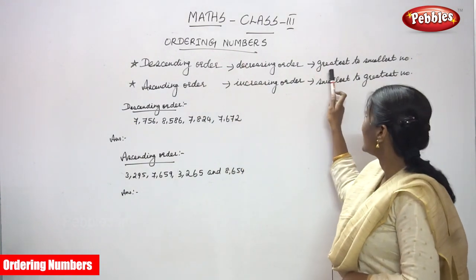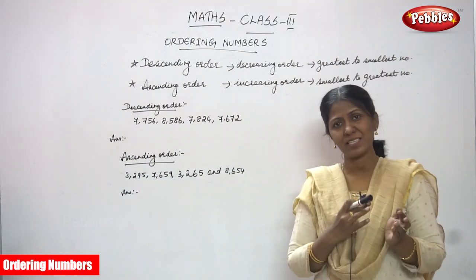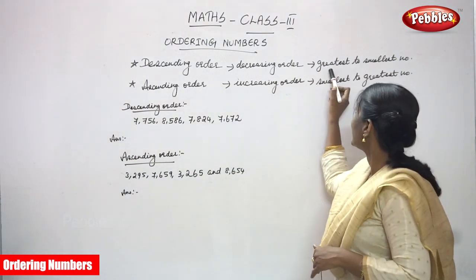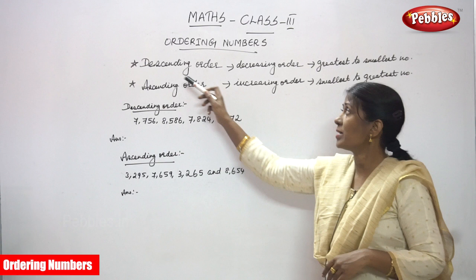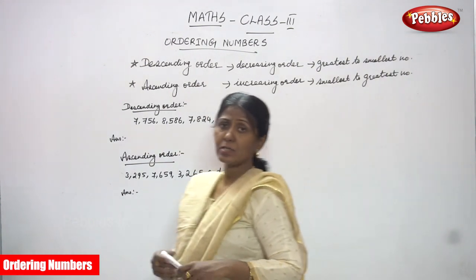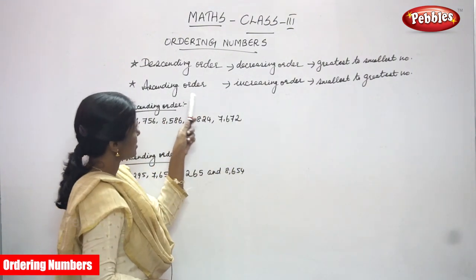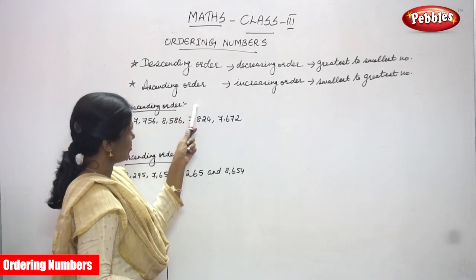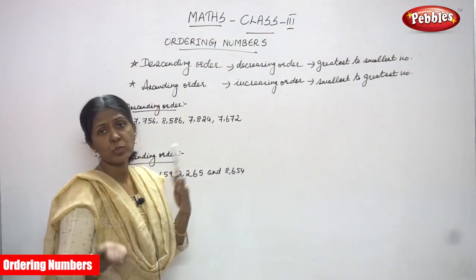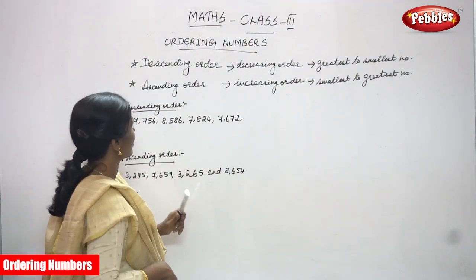Descending order means we have to arrange the numbers from the greatest number to the smallest number. Ascending order means we arrange numbers in increasing order — that means smallest to greatest number. That is called ascending order.